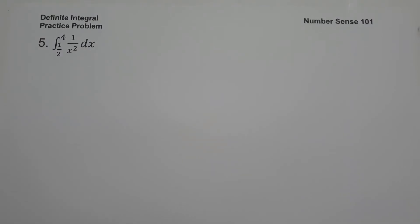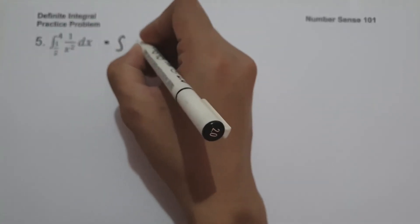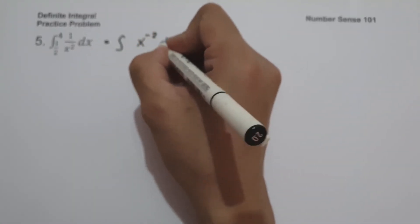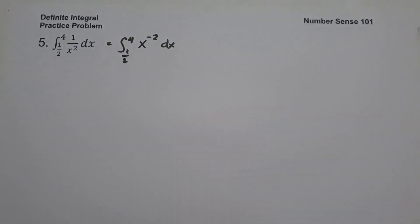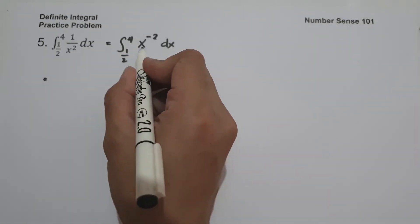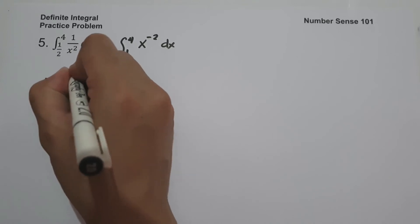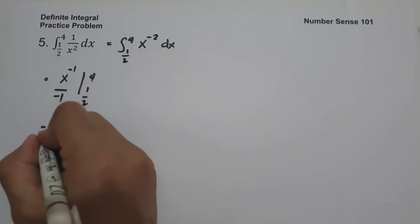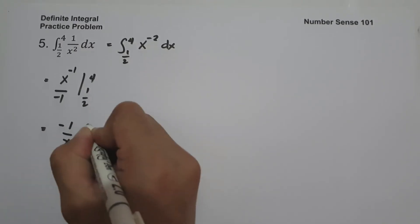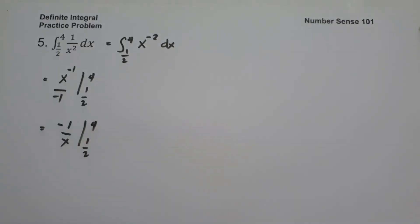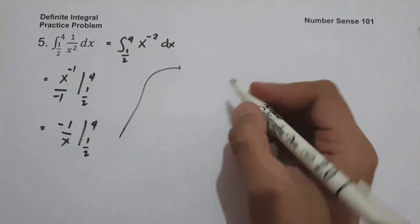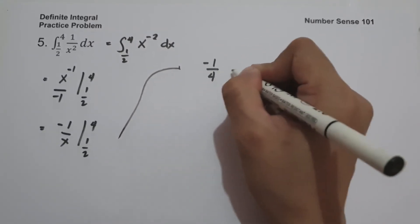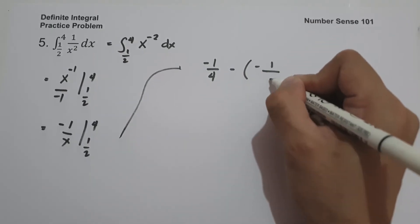For example 5, what is the anti-derivative of 1 over x squared dx, evaluated from 1/2 to 4? We rewrite 1 over x squared by moving x squared to the numerator, giving x raised to negative 2. The anti-derivative of x raised to negative 2 is x raised to negative 1 over negative 1, which we write as negative 1 over x, evaluated from 1/2 to 4. Substituting: negative 1 over 4 minus negative 1 over one-half.